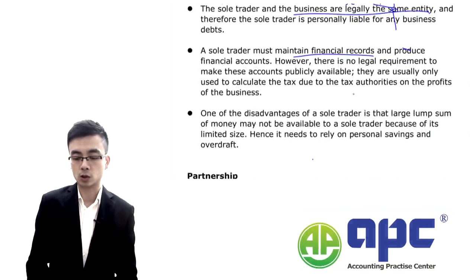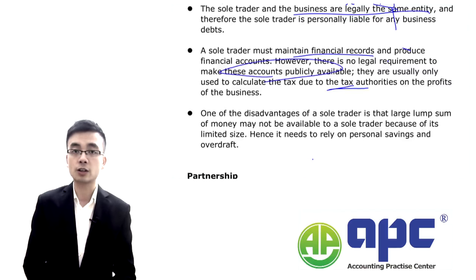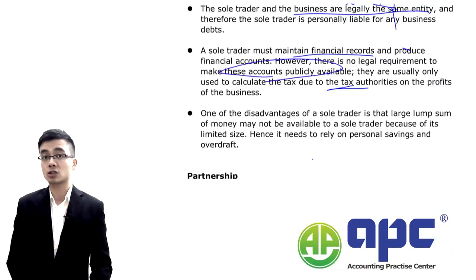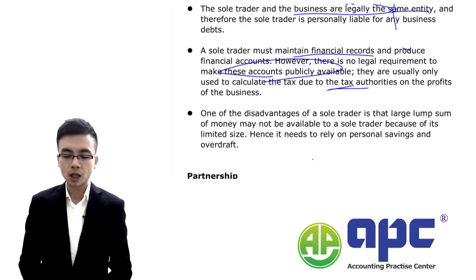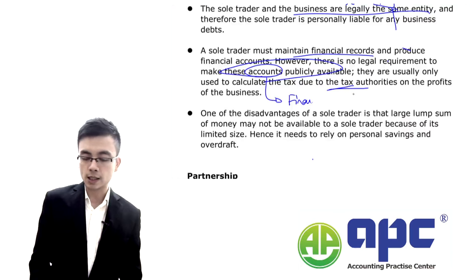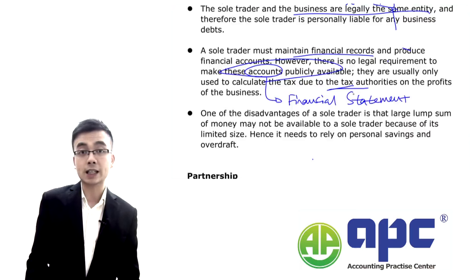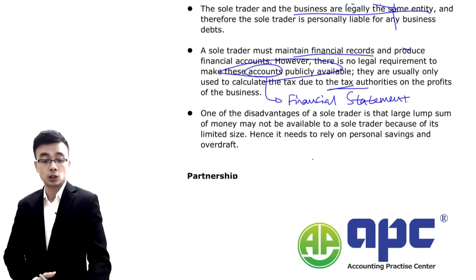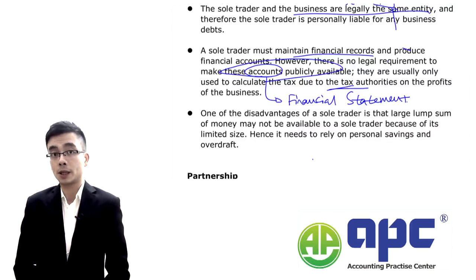We need to maintain financial records for tax purposes, but we don't have to publish our financial statements publicly, because we don't have to tell others how much profit we've made — since we don't sell our shares publicly. The accounts — also called financial statements — include the balance sheet, the statement of profit or loss, cash flows, and changes in equity.